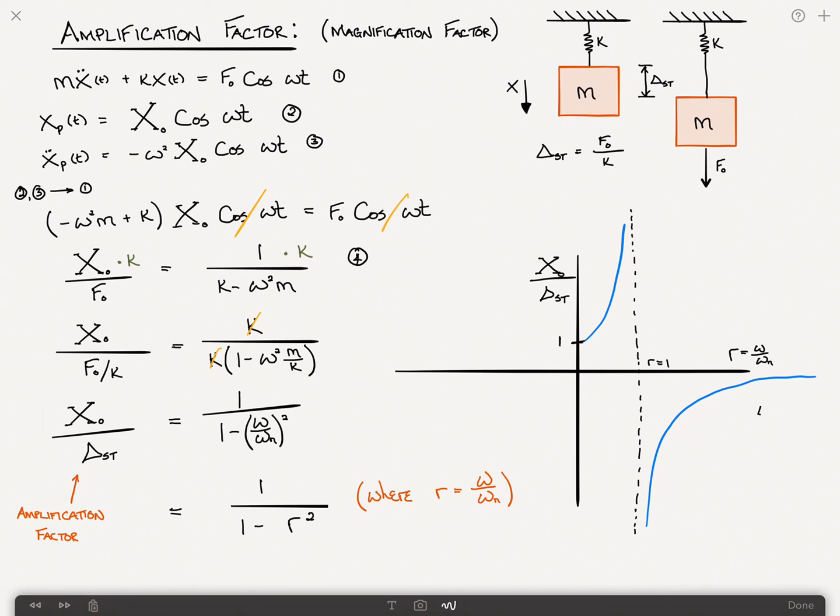On the other hand, down in this corner, we find that as the frequency gets very, very high, x sub 0 goes to 0. In other words, if omega is very much higher than the natural frequency of the system, the system is almost completely unaffected by it.